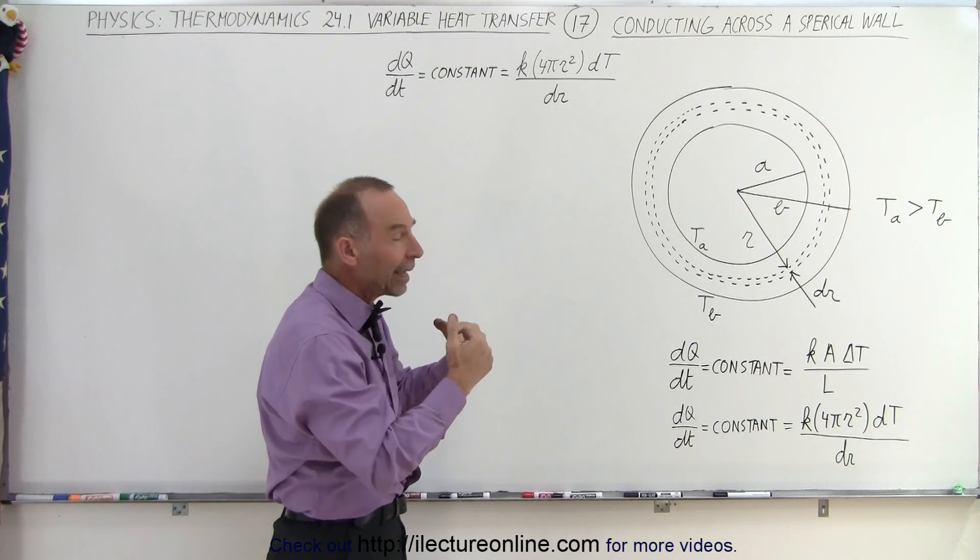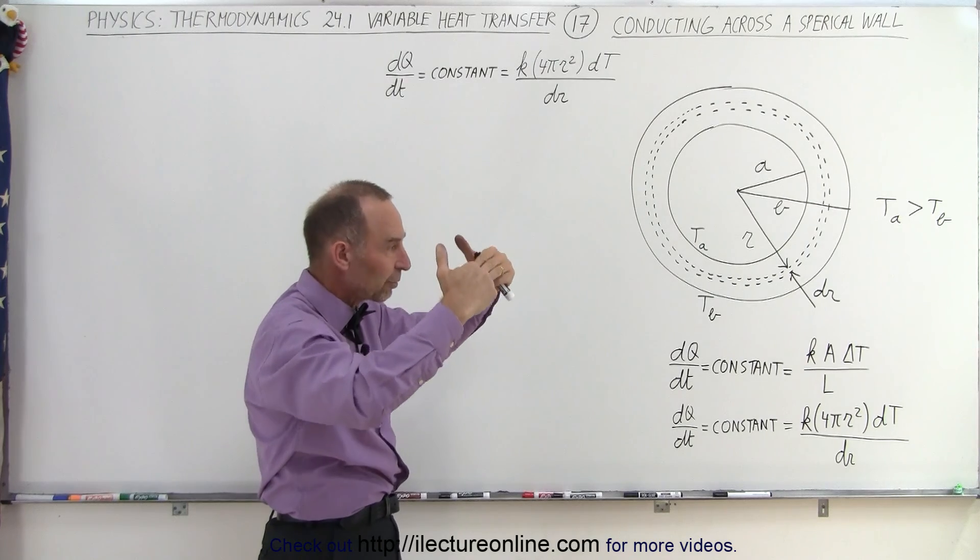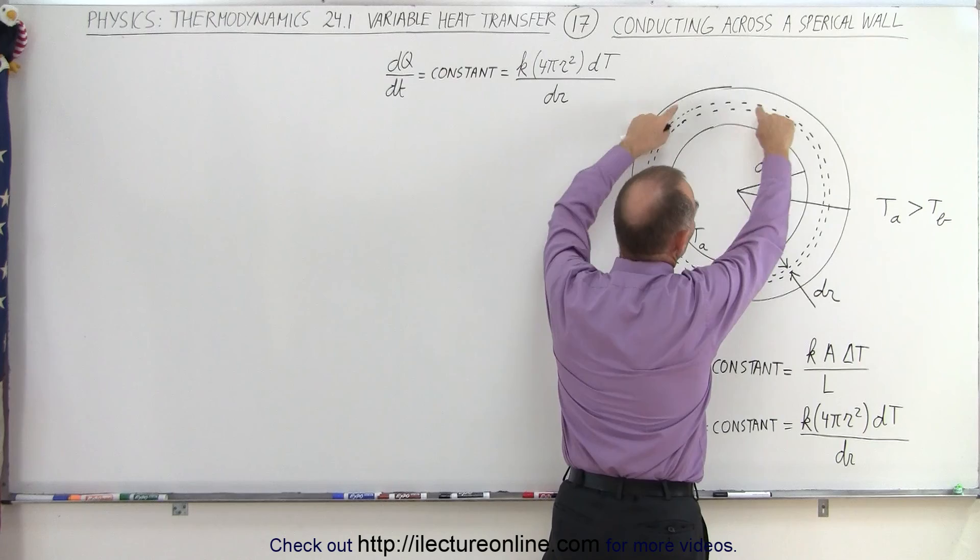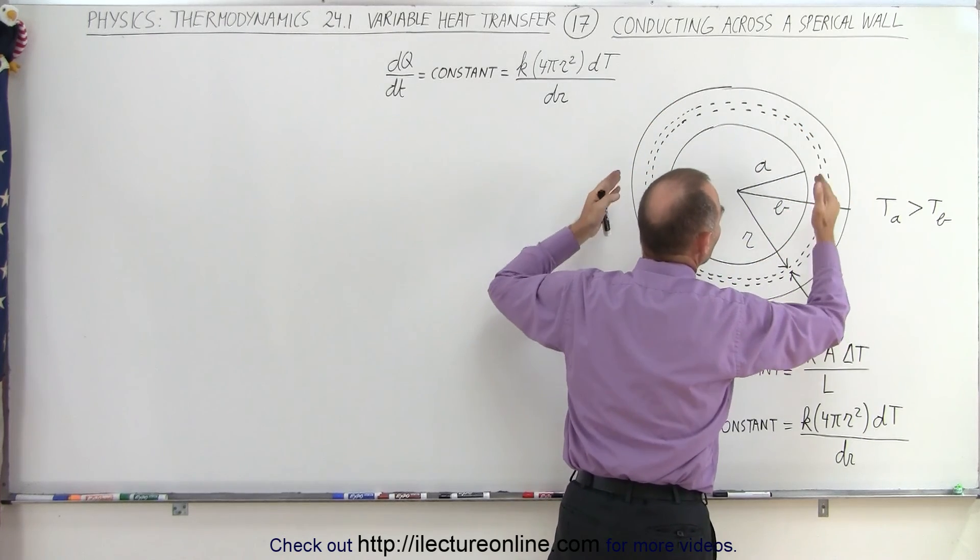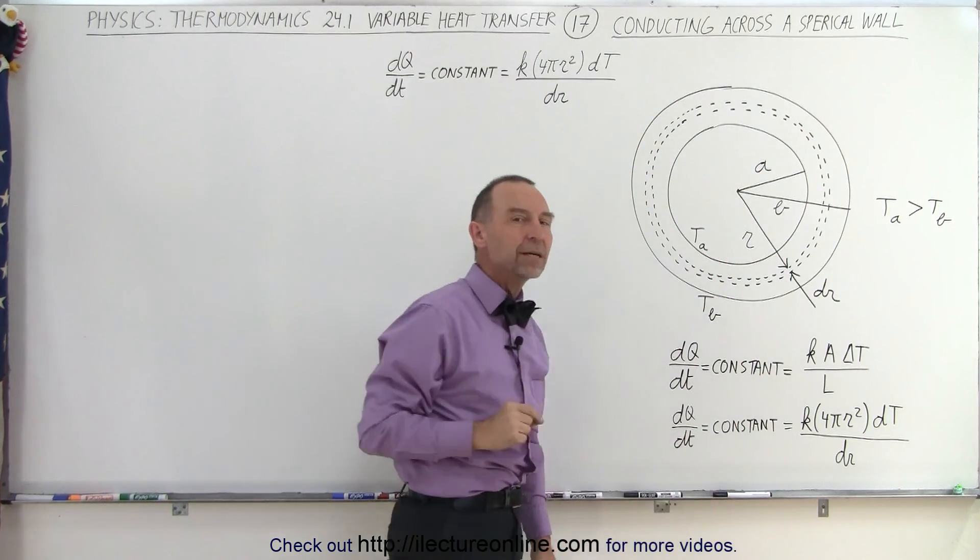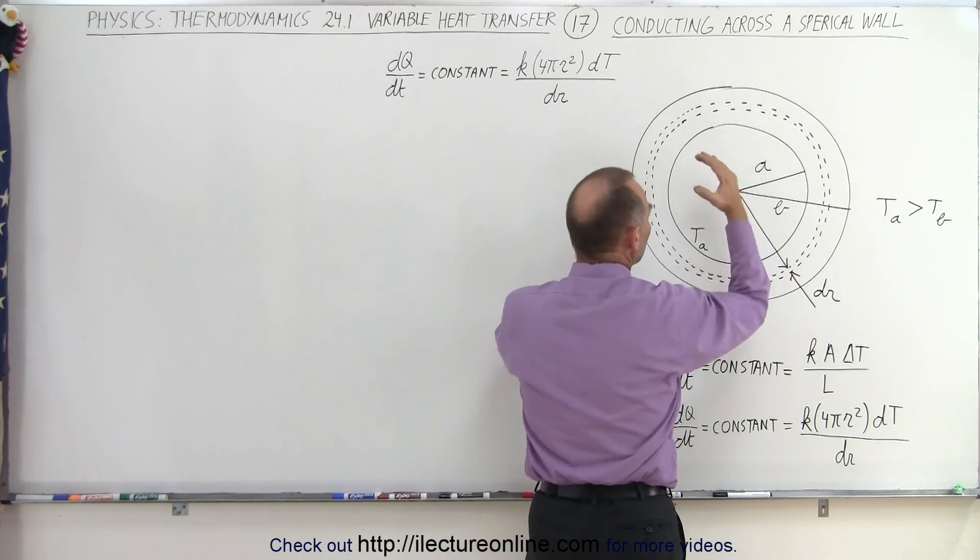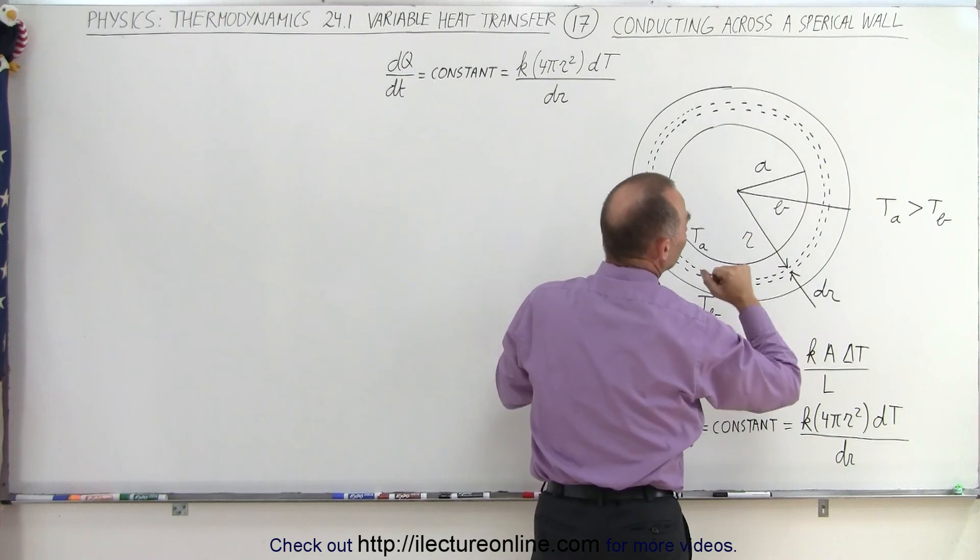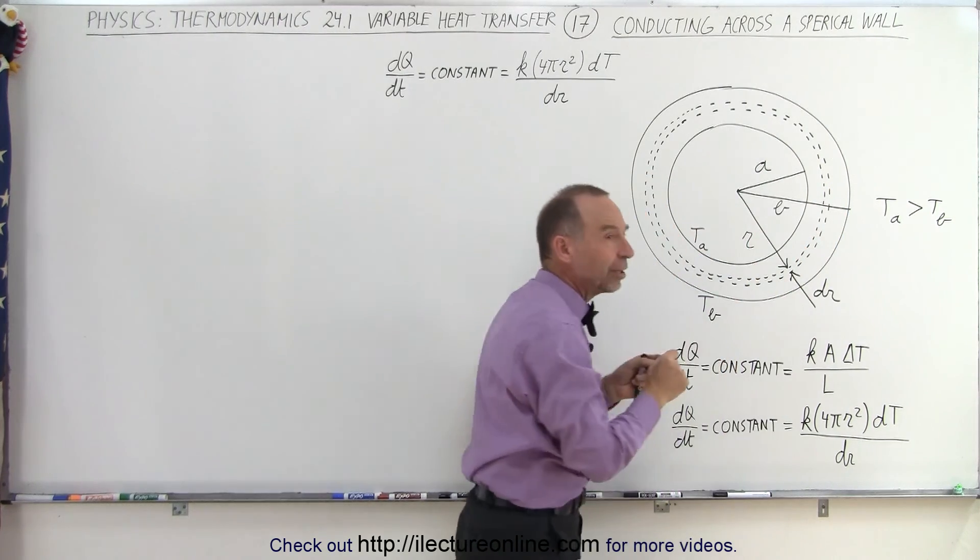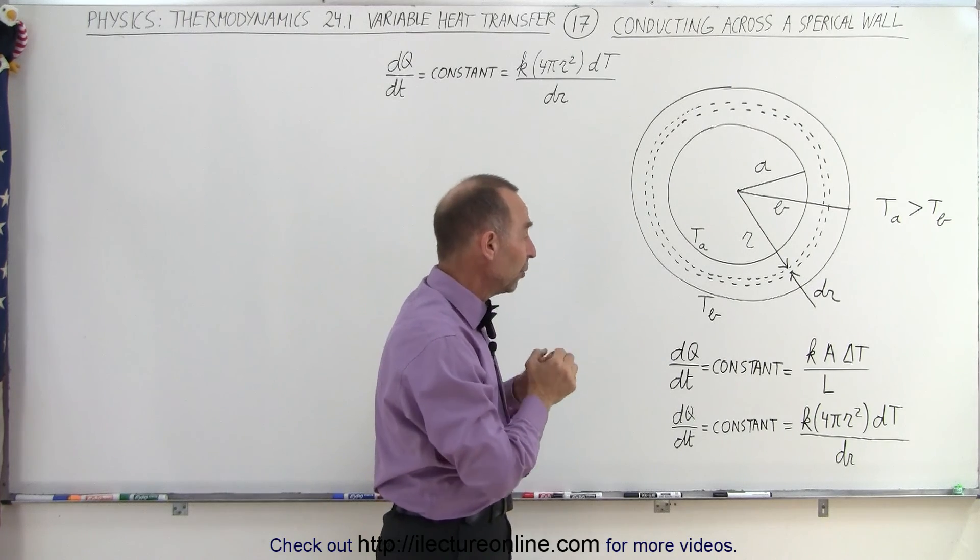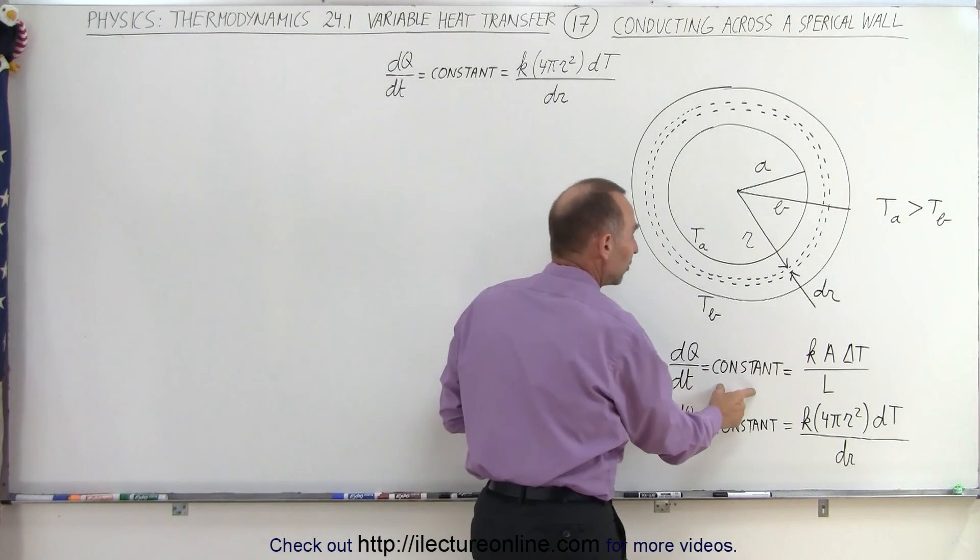First of all, we realize that the amount of heat transferring across the shell must be constant throughout, even though the circumference gets bigger and bigger as you travel outward. The dQ/dt has to be a constant. We can think of it as being a whole bunch of little shells piled on top of each other, and the heat traveling through each shell must be the same. You can't have more heat traveling through one shell compared to the other shell. So we can say that dQ/dt is constant.